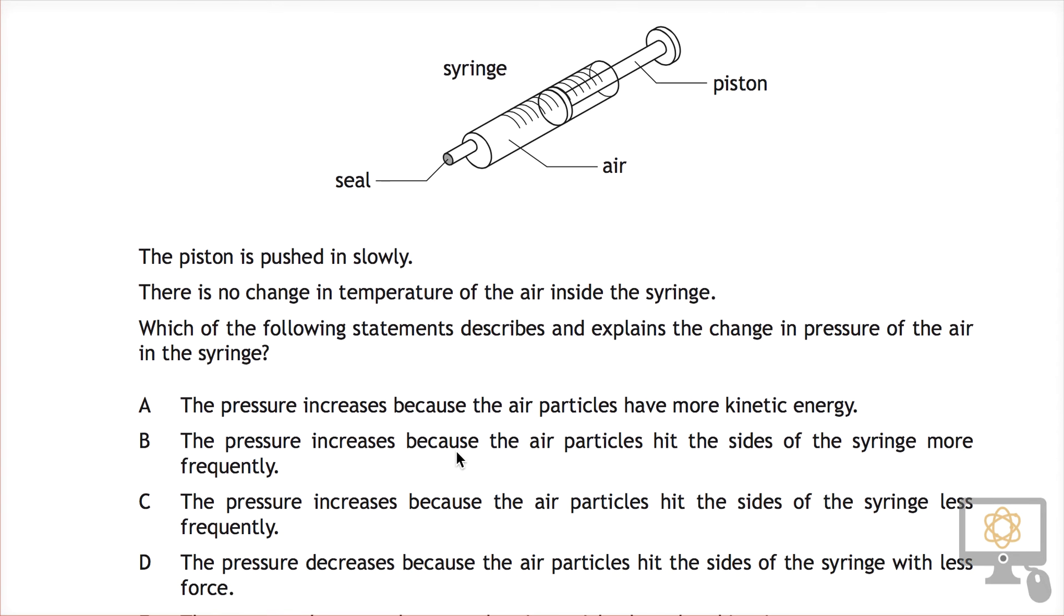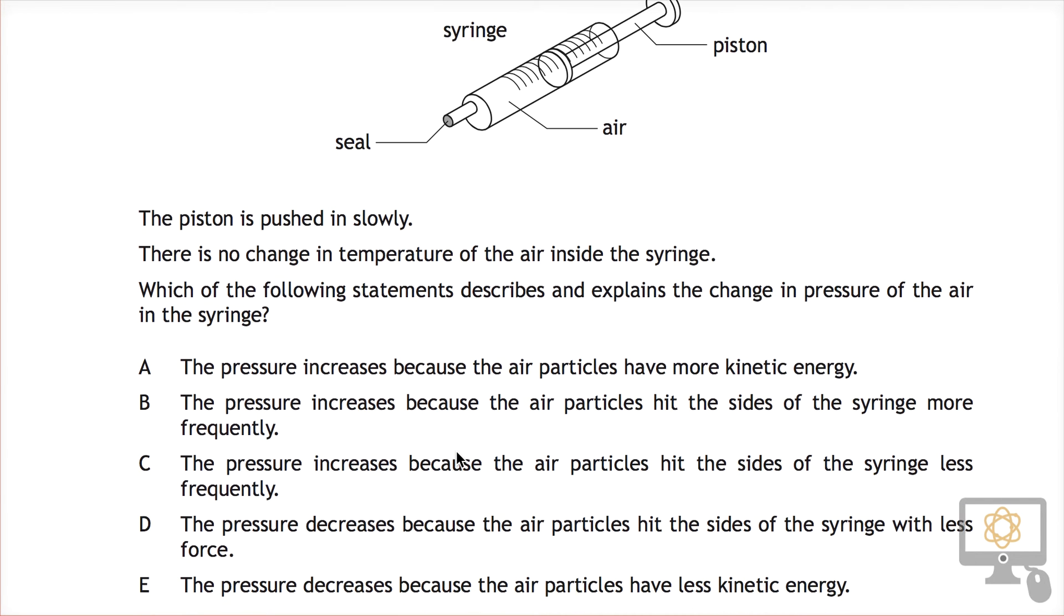So let's just have a look at the options that we have available to us, and then I'll talk through the correct answer and then we'll have a look at which one it is. So when we apply a force on this piston, we decrease the volume of air. So the volume of air decreases, and so that has an effect on the pressure of the air.